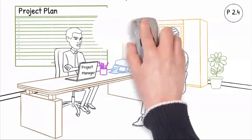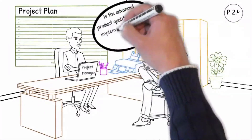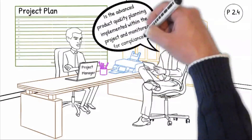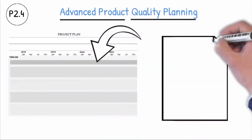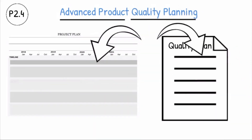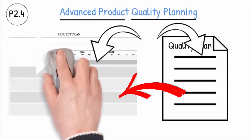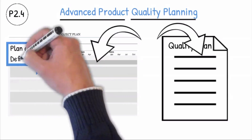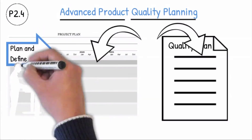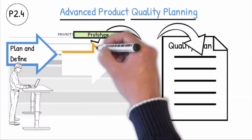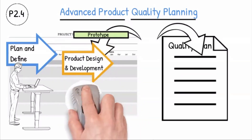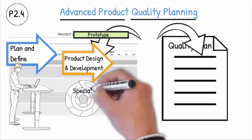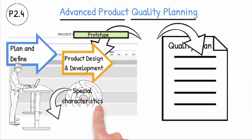Question P2.4: Is the advanced product quality planning implemented within the project and monitored for compliance? Quality-related project activities will meet the specific customer requirements like the APQP. Detailed quality-related project activities will be included in the project plan, or it is possible to have a separate quality plan that is referenced in the project plan. The APQP begins with assumptions, concepts and lessons learned from previous projects. The product design and development ensure that specifications and special characteristics are all reviewed in a formal design review and verified through prototypes and testing and included in the design FMEA.